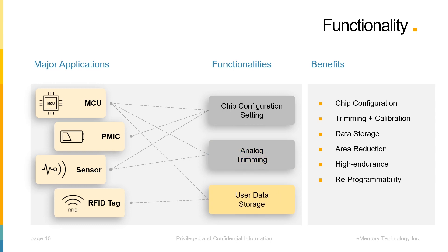Another common usage is for code storage, especially for specific applications like active or passive RFID tags. NeoEe can further optimize power specifications with an affordable area budget, thanks to its low power consumption in read and write operations. Some advanced users may even adopt NeoEe and NeoBit solutions altogether on the same platform to build specific code allocation or unique treatments for digital and analog parts.